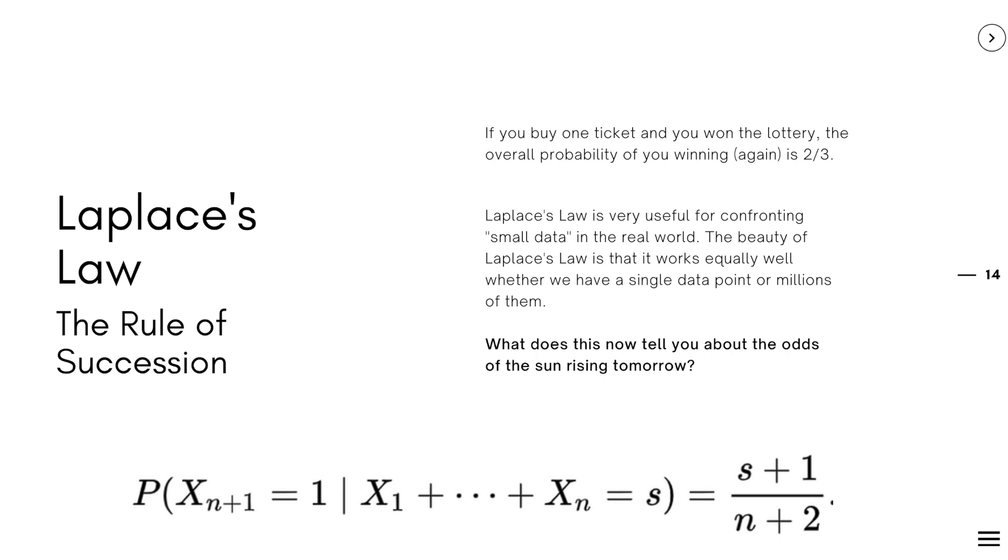Let's say we had purchased N tickets in a lottery and out of those N tickets, S of those are successful. Or S of those are tickets in which you actually won the lottery. So what this rule of succession will help you predict is what is the probability of you winning in the next trial?